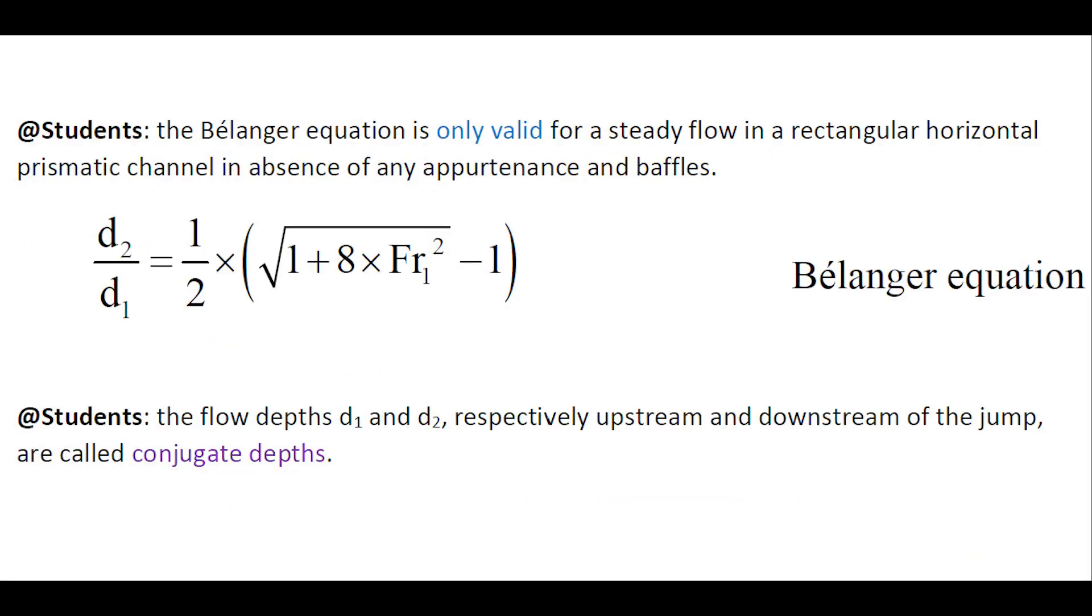The Bélanger equation is only valid for a steady flow in a rectangular horizontal prismatic channel, in absence of any baffles or perturbations.